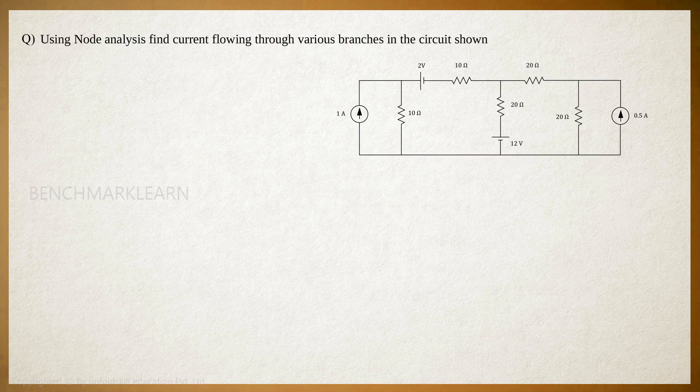Use node analysis to find the current flowing through various branches in the circuit shown. First, identify the nodes. Here, we can see three nodes and one reference node. Assign node voltages V1, V2, and V3 to nodes A, B, and C respectively.